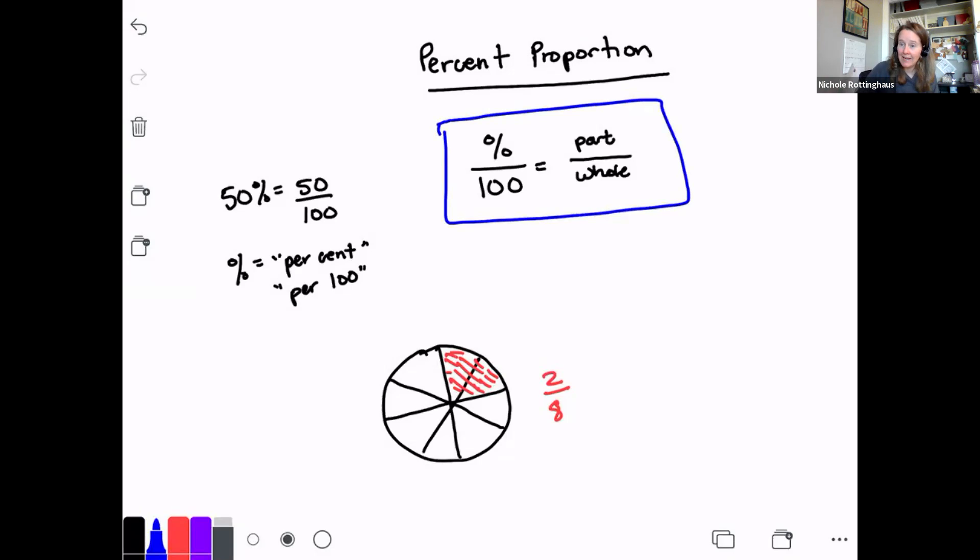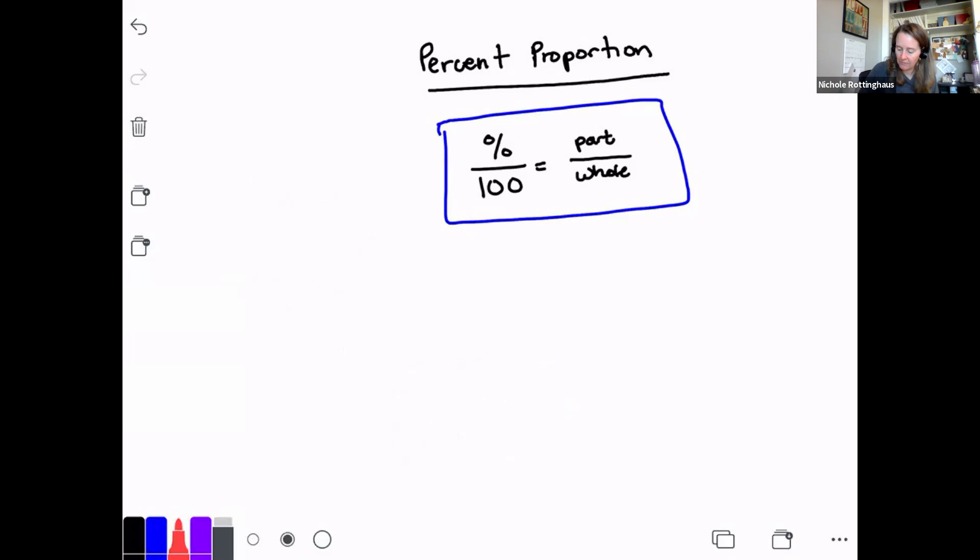All right? Now, today, I'm not going to solve this pizza problem because we're actually not solving for the percent today. Today, we're going to, so we've got three, we've got four days this week. We're going to spend today focused on the part. Tomorrow, we'll focus on the percent. And then on Wednesday, we'll focus on the whole. And then on Thursday, we're going to review them all, okay? So we're going to be spending today looking at finding the part, finding a part of a whole.